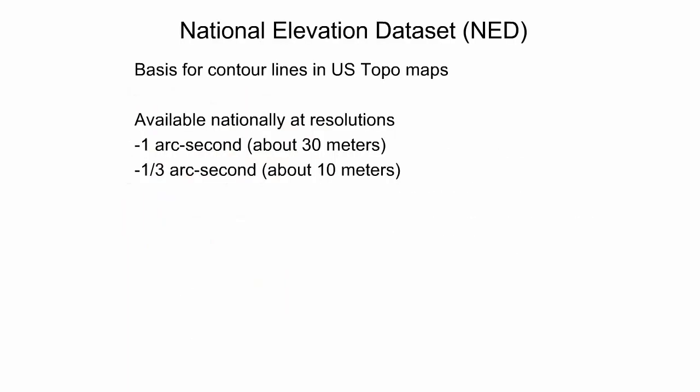The National Elevation Dataset, also known as NED, is used as the basis for contour lines in US Topos. NED data are available nationally at resolutions of 1 arcsecond, corresponding to about 30 meters on the ground, and one-third arcsecond, corresponding to about 10 meters on the ground. Some areas provide coverage at a 3 meter resolution.